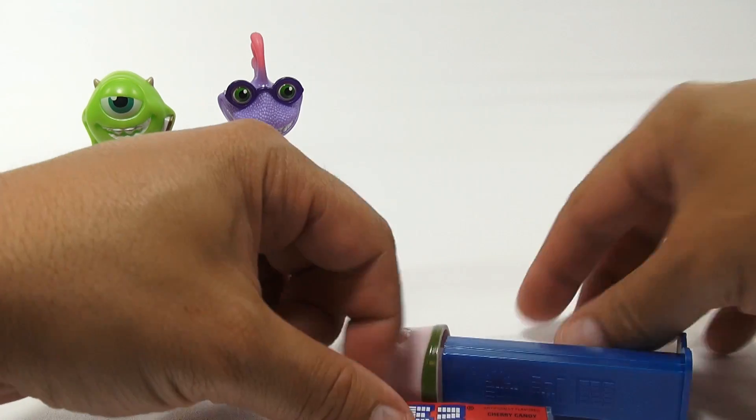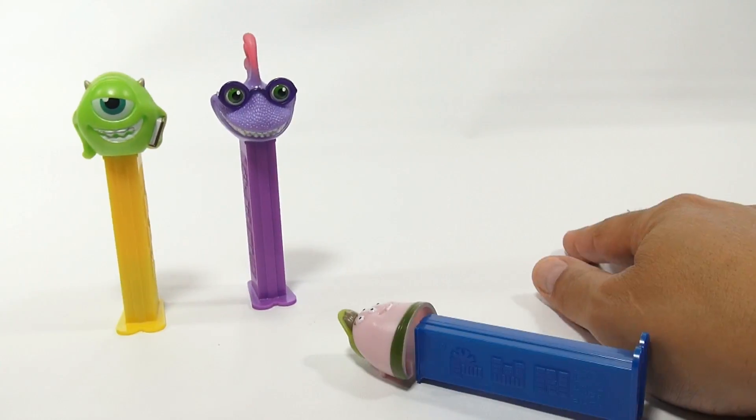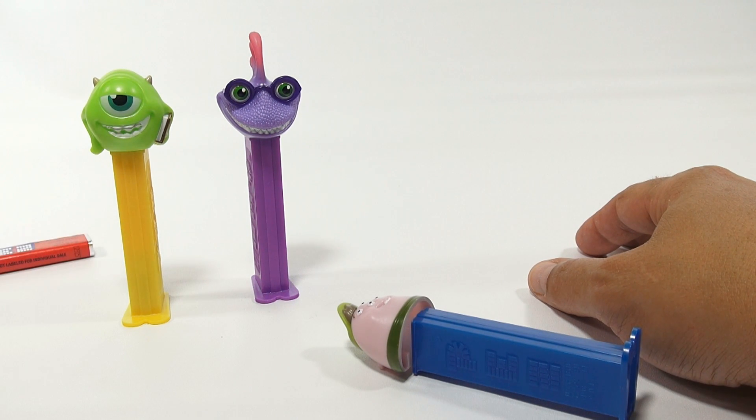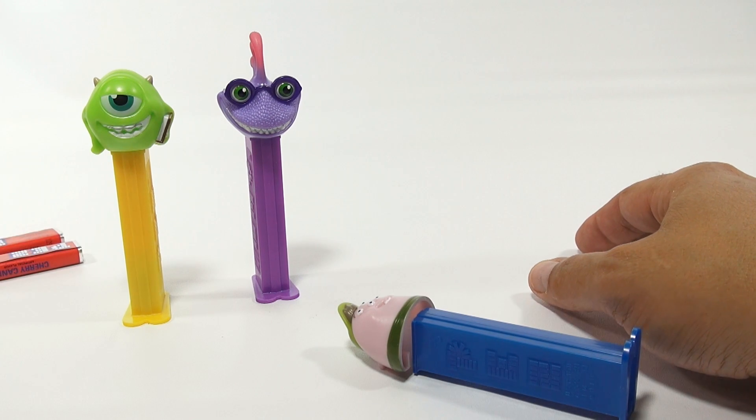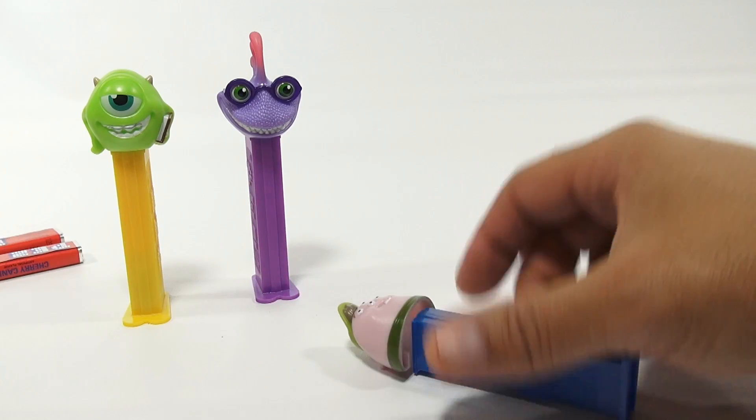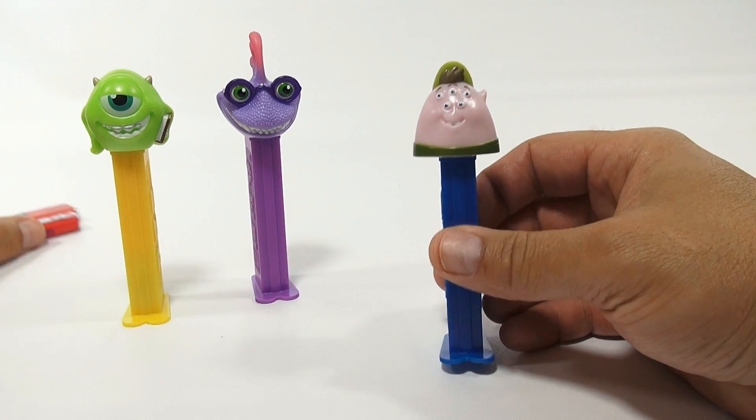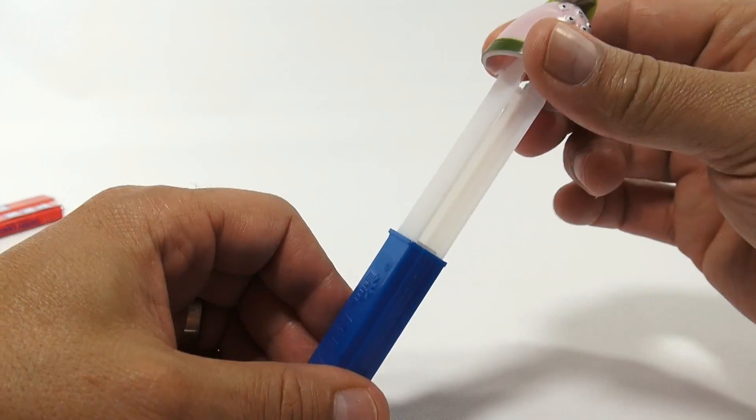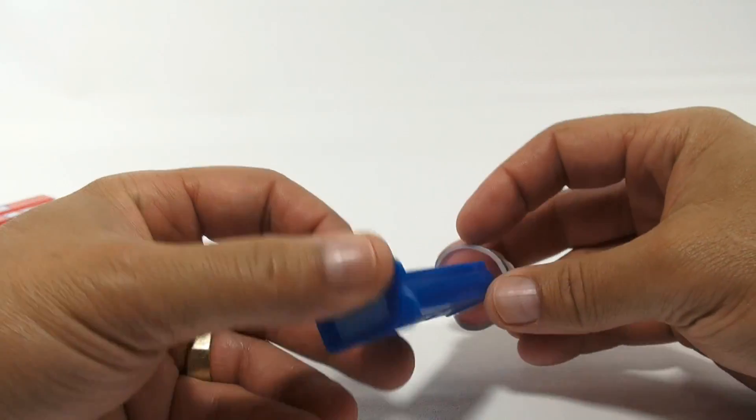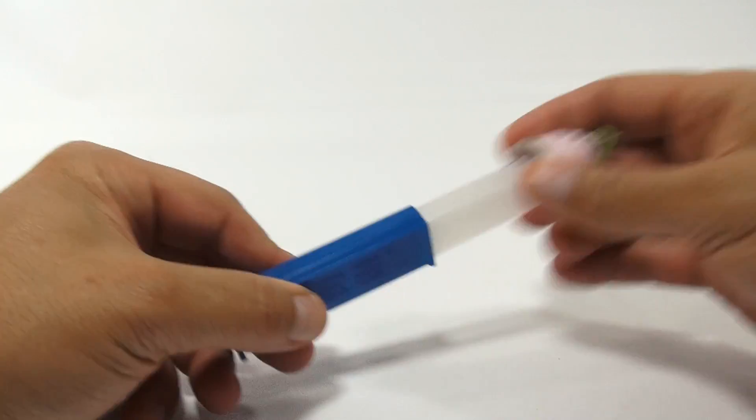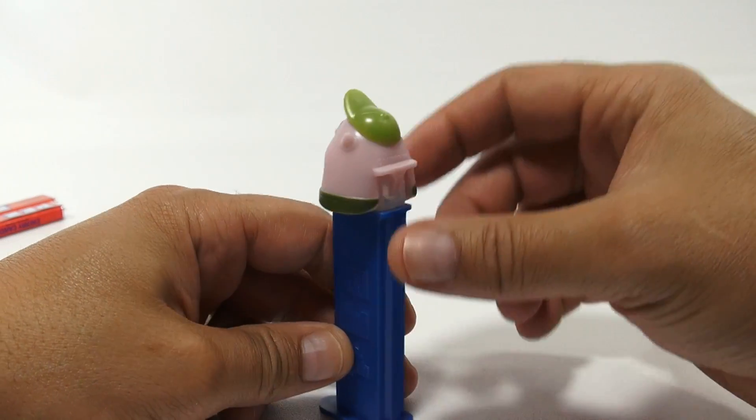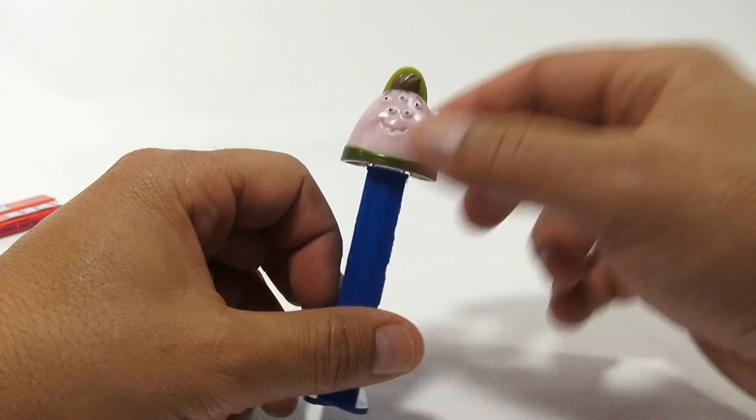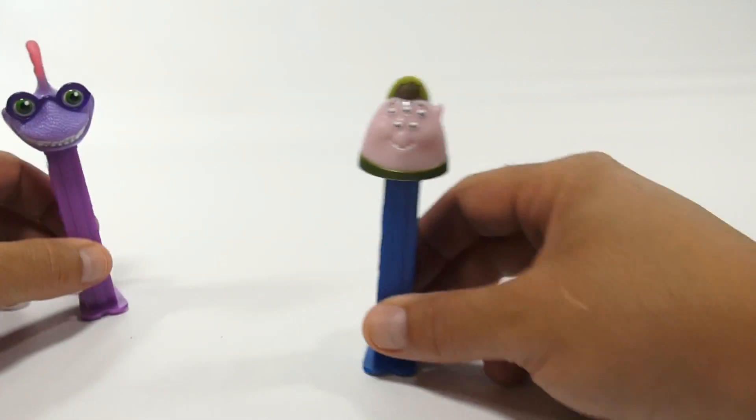Let's save Sully for last. This guy here, this one had same candy, so they all have the same candy it looks like. Kind of boring if you ask me. Someone's gonna buy the whole set, do they want the same candy? No, they don't. Here is Scott Squishy Squibbles and he has a blue base. It is neat that they all have different bases. He's got one horn off to the right.